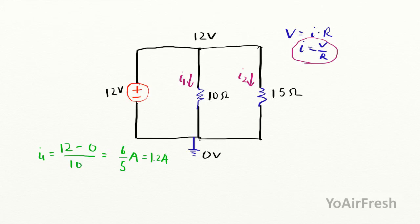For I sub 2, we still have the 12 volts here. This is also going to be 12 volts—this entire node on the top here is 12 volts—and this entire node here on the bottom is zero.